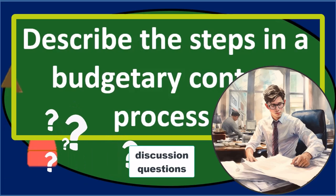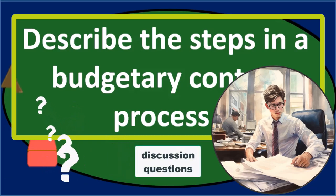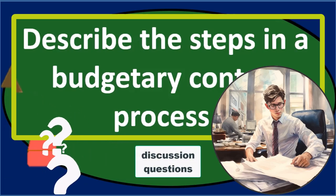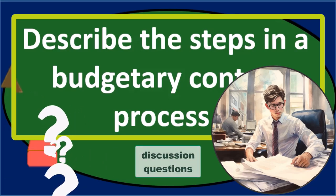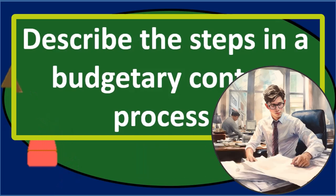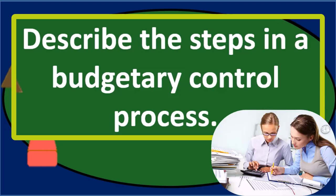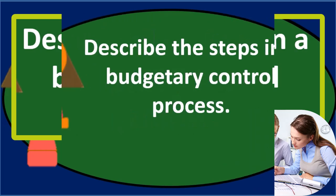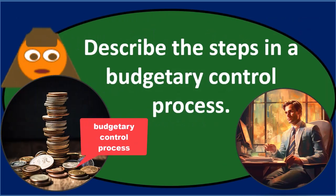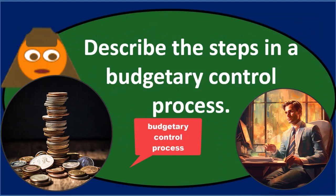The same is true for discussion questions, in which case we're typically getting points to contribute to the conversation as long as it's relative information. So if we go through this process, we're saying describe the steps in the budgetary control process. First we might want to basically discuss the budgetary control process — the sequence of the budgetary control process — and then we can go into more depth in those steps if we have time.